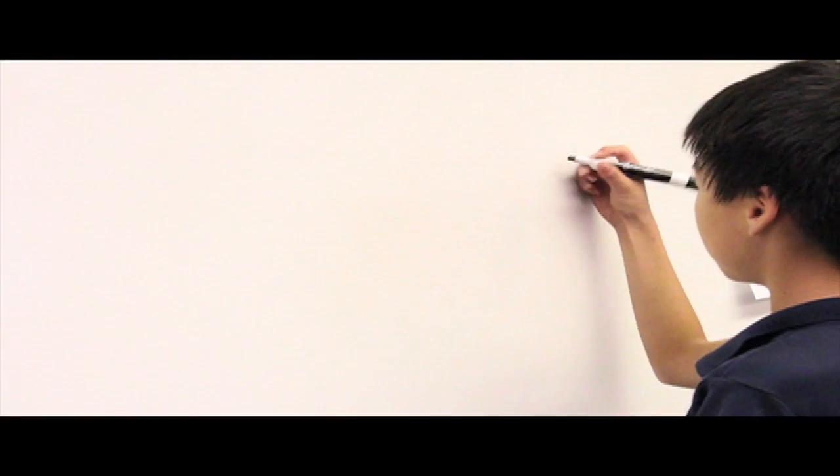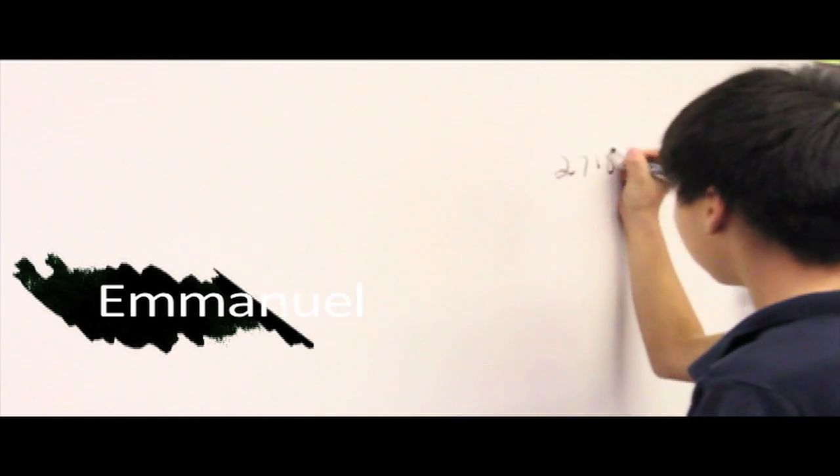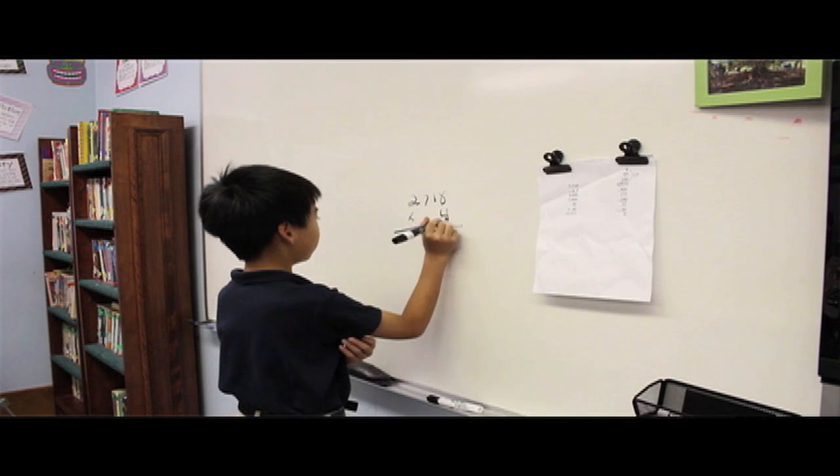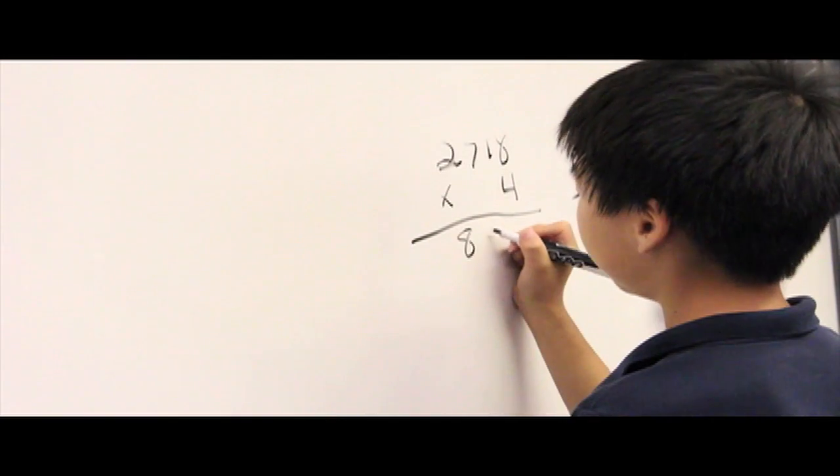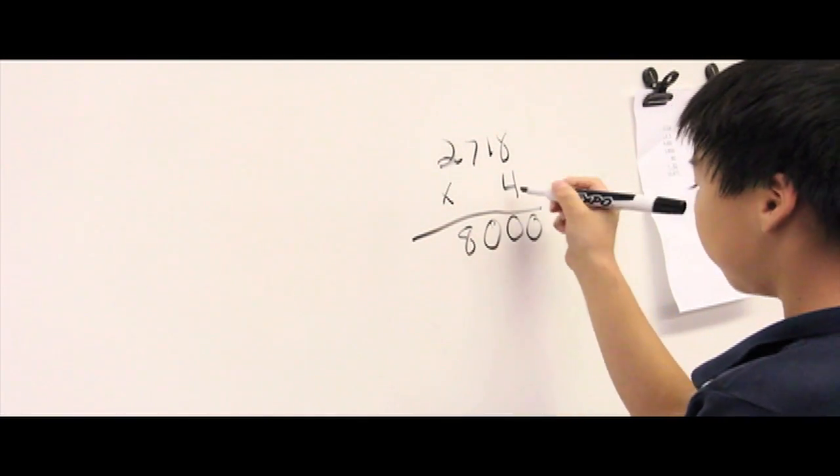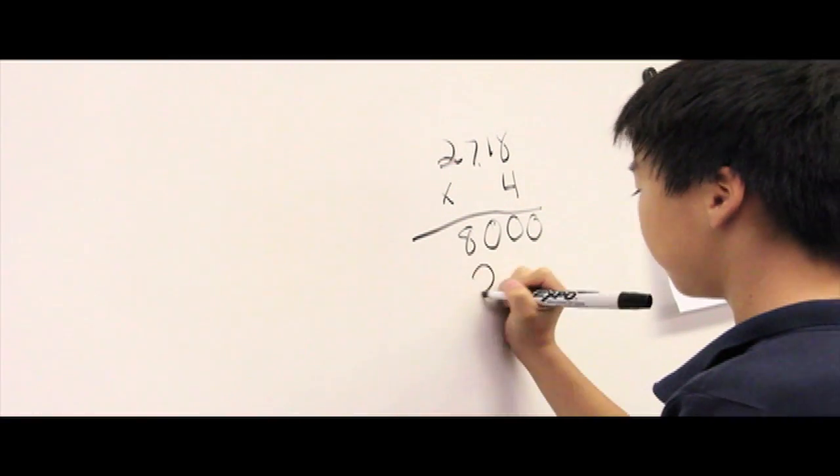Our multiplication problem is 2,718 times 4. First you do 4 times the thousands digit, which is 2. You get the product of 8,000. Then you do 4 times the hundred digit, which is 7 and you will get the product of 2,800.